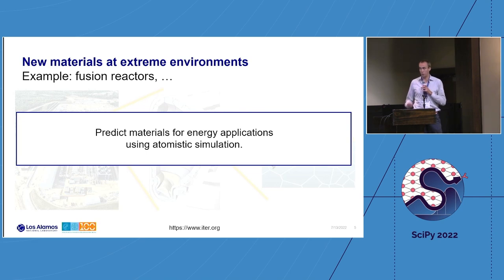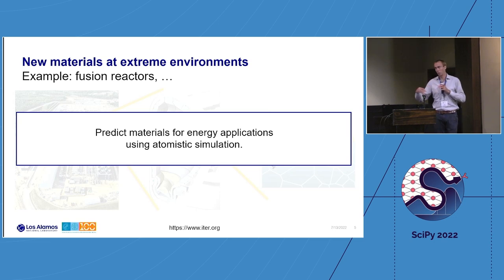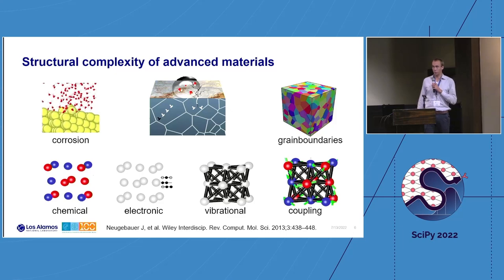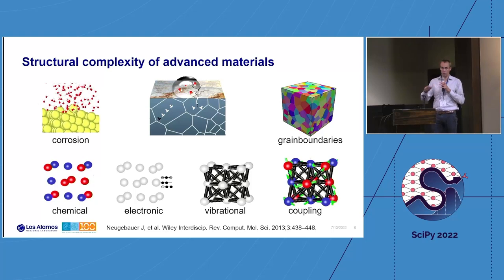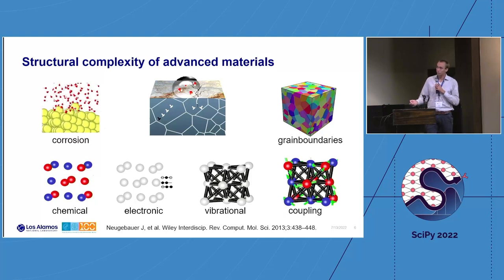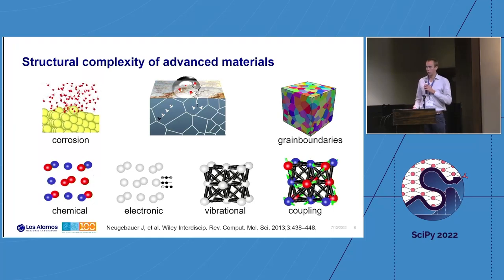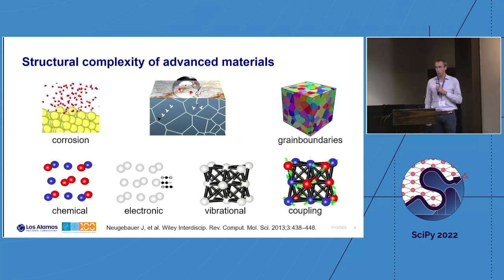The key part is prediction from simulation, starting from atomistics — without any external inputs from experiment to build our models. There are different properties or features of the material to consider: for example, corrosion, and in the case of fusion reactors, hydrogen or helium bombardment. We then have chemical interactions, electronic contributions, and vibrational contributions — including effective harmonic models, as we heard about this morning.